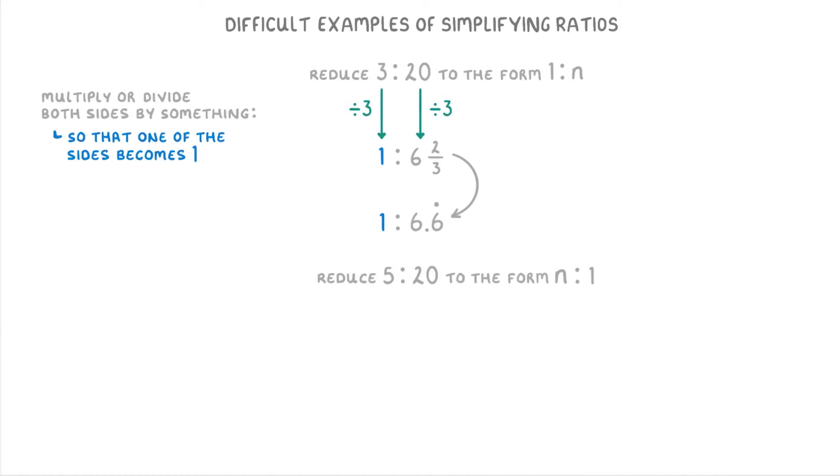Let's finish off by having a go at this one, where we need to reduce 5 to 20 to the form n to 1. So this time we're trying to make the right hand side the number 1. So to change the 20 to a 1, you need to divide it by 20. Which means you also need to divide 5 by 20. Which is 1 quarter, or 0.25. So our ratio is 0.25 to 1.